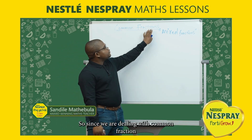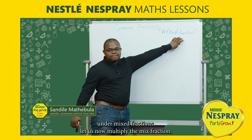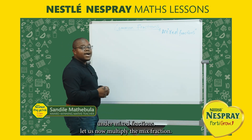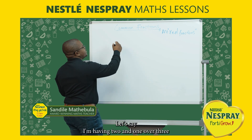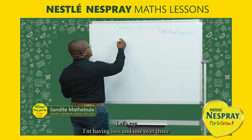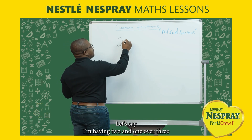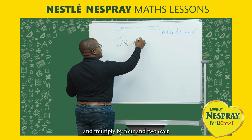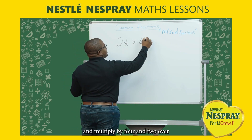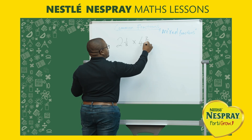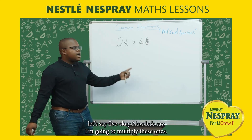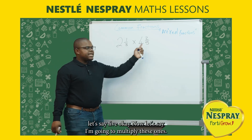Since we are dealing with common fractions and mixed fractions, let us now multiply the mixed fraction. Let's say I'm having 2 and 1 over 3, multiplied by 4 and 2 over 5. Now let's say I'm going to multiply this one.